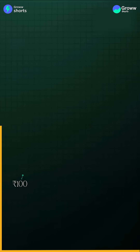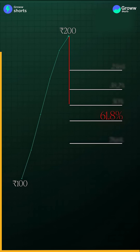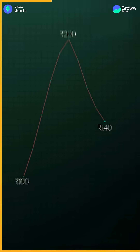If a stock moves from 100 Rs to 200 Rs, that is a strong uptrend. But when the stock starts to pull back, that's where Fibonacci retracement comes in.